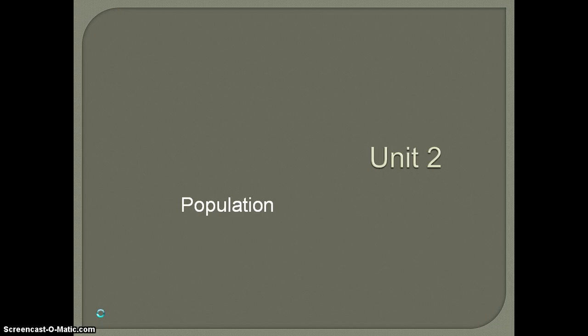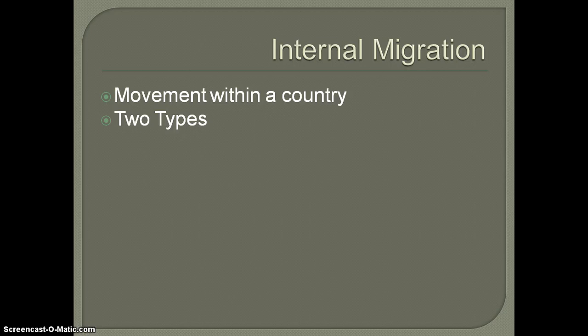Today we're going to be talking about something a little bit different. Up to this point we've been talking about international migration — movement between countries. Today we're going to be talking a little bit more about internal migration, specifically looking at the United States and some of the trends we've seen over really the last 10 to 20 years. When we talk about internal migration, we're talking about movement that happens within a country.